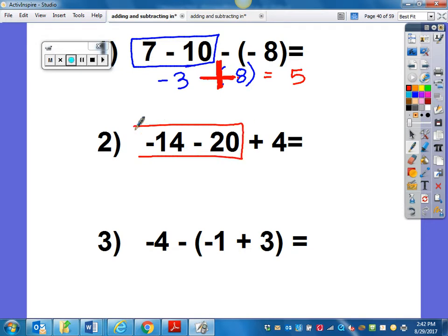I have negative 14 minus 20. That would be negative 34. The same sign, a negative 14 and a negative 20. So I get a negative 34 plus 4.